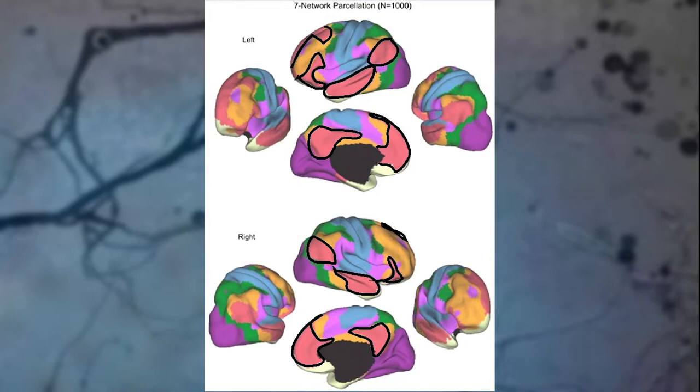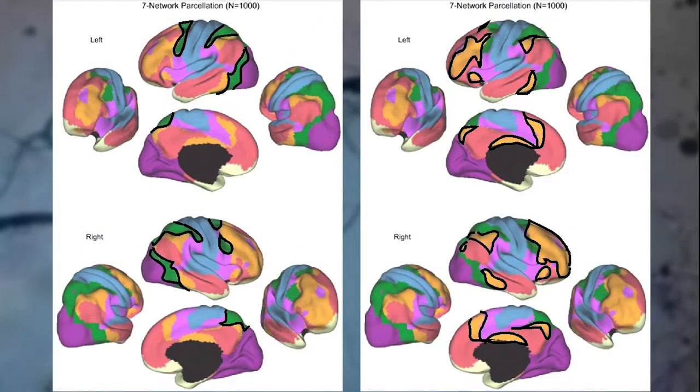Scientists noticed that this red circuitry was downregulated when people were actively and willfully paying attention to the execution of some task. Now let's move on to another circuit.